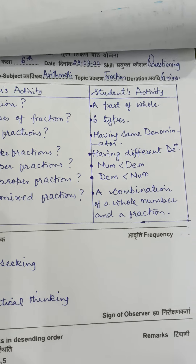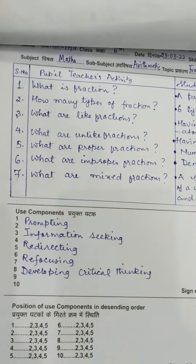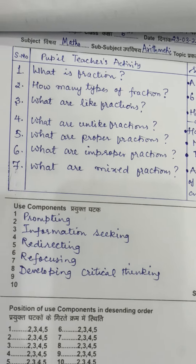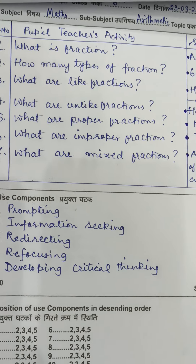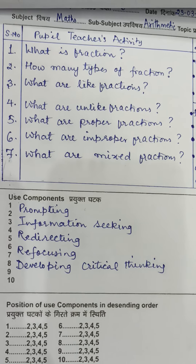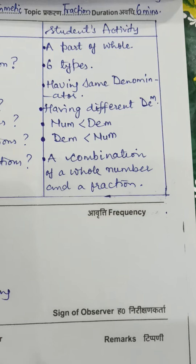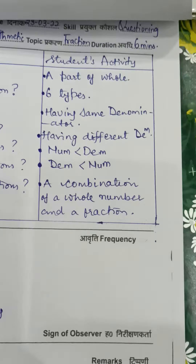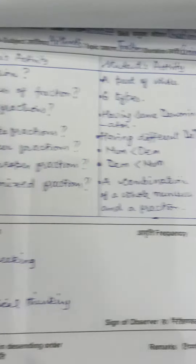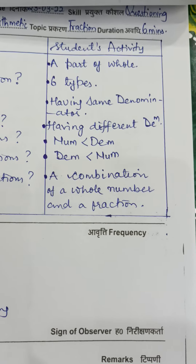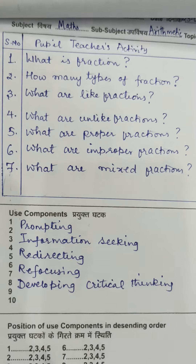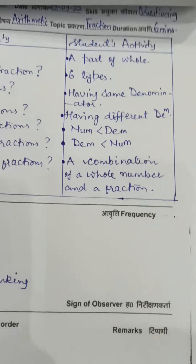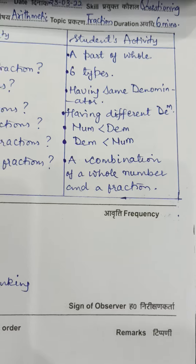After this comes the fourth skill — the questioning skill, which is question and answer. All that the teacher has taught, the teacher now asks questions and expects correct answers. For example: what is a fraction? — a part of a whole. How many types of fractions do we have? — six types. The students answer these questions together.